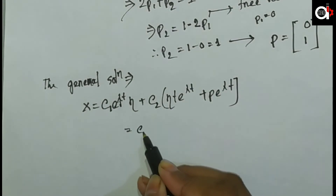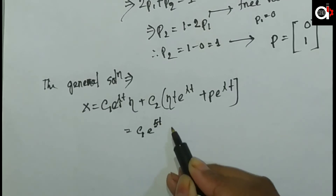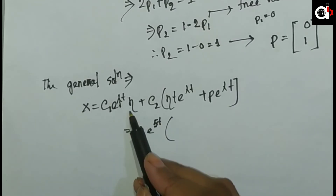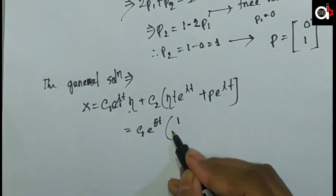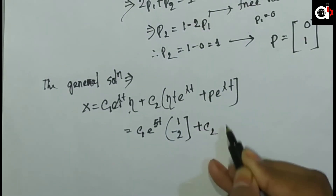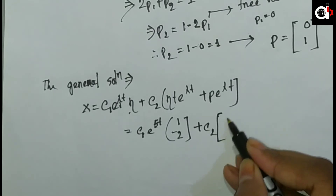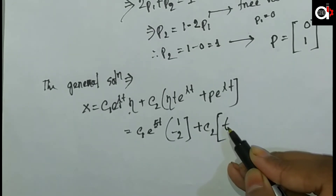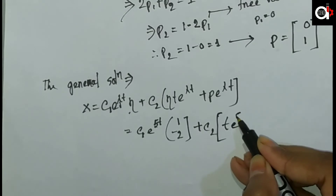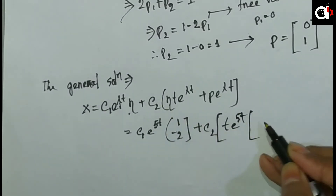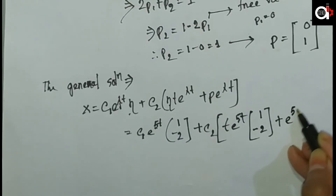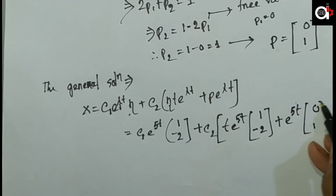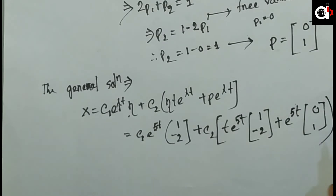We can now write the general solution. It is x equals c1 times e to the power 5t times eigenvector [1, minus 2], plus c2 times t times e to the power 5t times eigenvector [1, minus 2], plus c2 times e to the power 5t times the second generalized eigenvector [0, 1].